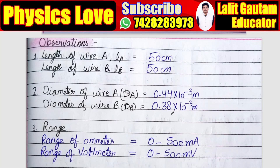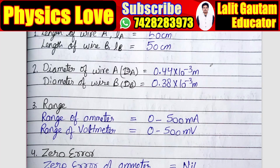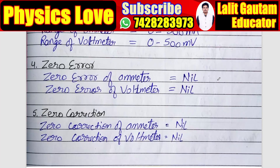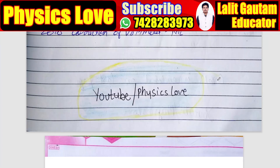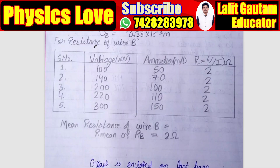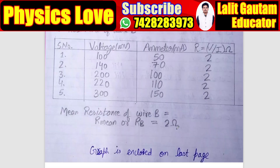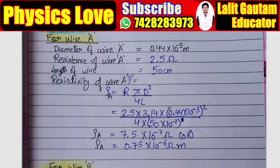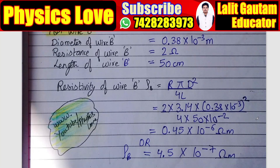Similarly, on the ruled page, you can write other observations. As we have two wires, the length of wire A is 50 centimeters and the length of wire B is also 50 centimeters. Diameter of wire A, diameter of wire B, range of ammeter, range of voltmeter, zero error, and zero correction — all these things are there. Then the observation table for wire B includes serial number, main scale reading, vernier scale reading, and diameter. For resistance of wire B, these are the observations and we have taken the mean for wire B. Then in calculation: for wire A, we calculated the resistivity as 0.75 × 10⁻⁶ ohm·meter, and for wire B, we find out the resistivity as 0.75 × 10⁻⁷ ohm·meter.